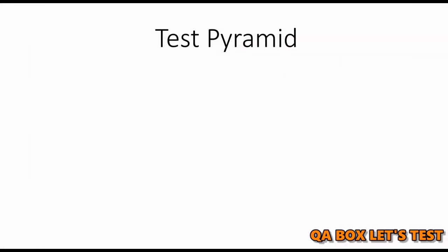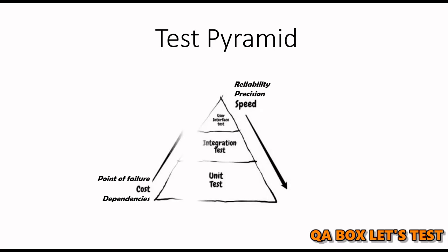Micron has provided this test pyramid, which is a metaphor that tells us to group software tests into buckets of different granularity. It gives us an idea of how many tests we should have in each of these groups. There are different units in a software, and when we test those units separately in isolation, those tests are called unit testing. Then we start merging these units together, and the tests performed once the integration between those two units is done are called integration tests.